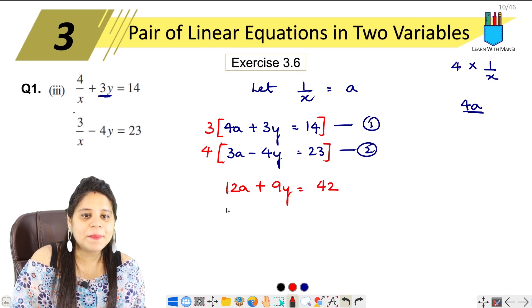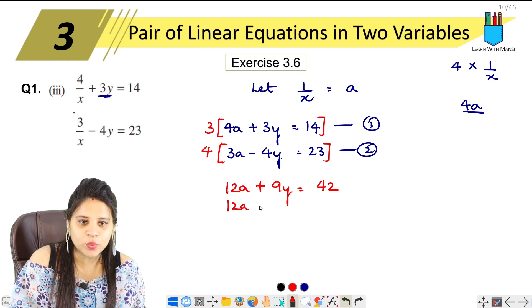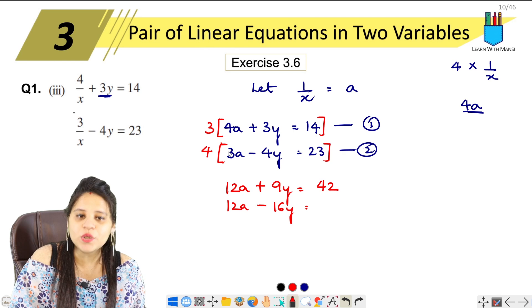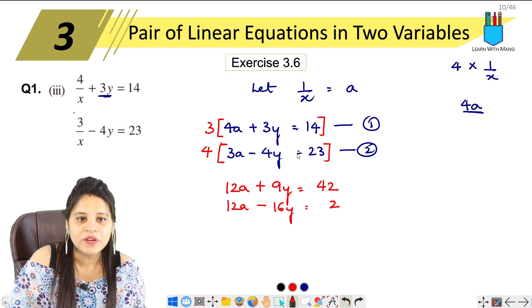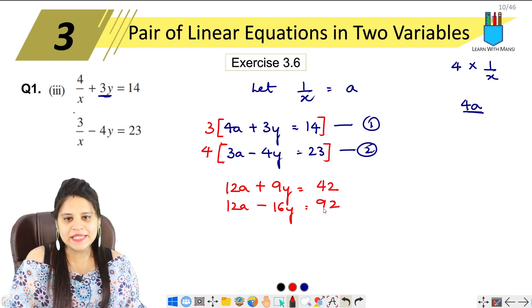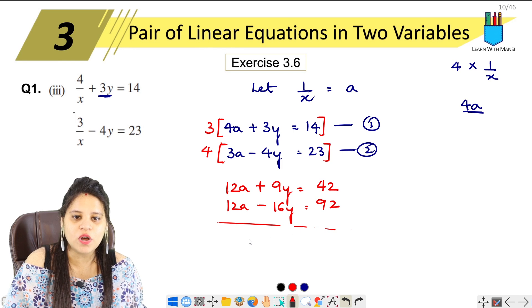Next we have 4 into 3. Again, 12a minus 4 fours are 16y equals to 23 into 4. So 4 threes are 12, 4 twos are 8, 92.